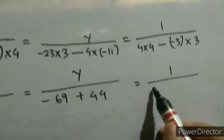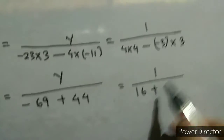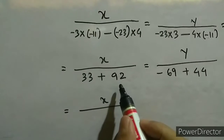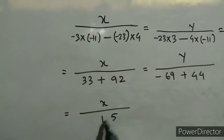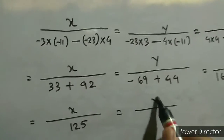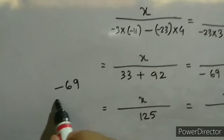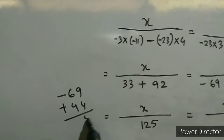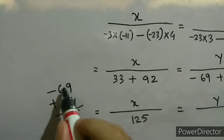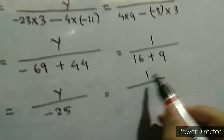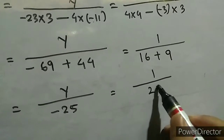Here we get 4 into 4 equals 16, minus 3 into 3 equals 9. For x: 92 plus 33 equals 125. For the y part: minus 69 plus 44 — since 69 is greater and the sign is minus, this gives minus 25. And here 16 plus 9 equals 25.